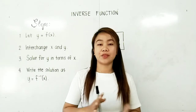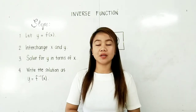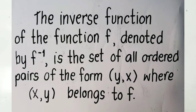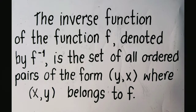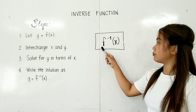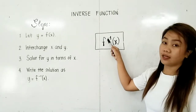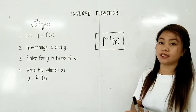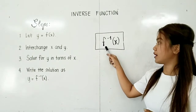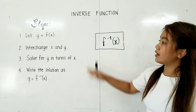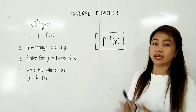Hello students. In this video I will discuss the inverse function. The inverse function of the function f, denoted by f raised to negative 1, is the set of ordered pairs of the form (y, x) where (x, y) belongs to f. The inverse function is denoted by the symbol f⁻¹(x), interpreted as the inverse function of f or the inverse function of f of x. We have here 4 steps in solving the inverse function.